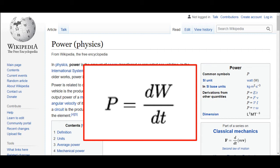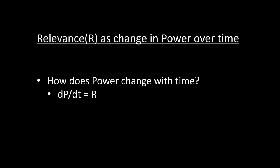Power is also a rate — it is the rate at which energy or work changes over time. We can define a new term: what is the derivative of power, or the second derivative with respect to time of work? We can call this the relevance, or some kind of locality of power — essentially, how does power change over time in a specific locality.